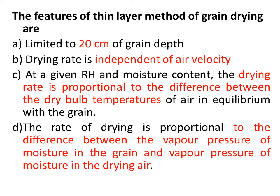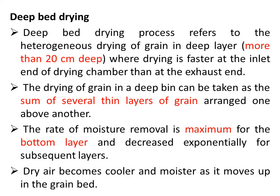Features of the thin layer method: it is limited to a 20-centimeter grain depth; it is independent of air velocity at a given relative humidity and moisture content; the drying rate is proportional to the difference between the dry bulb temperature of air in equilibrium and that of the grain; and the rate of drying is proportional to the difference between the vapor pressure of moisture in the grain and the vapor pressure of moisture in the drying air.